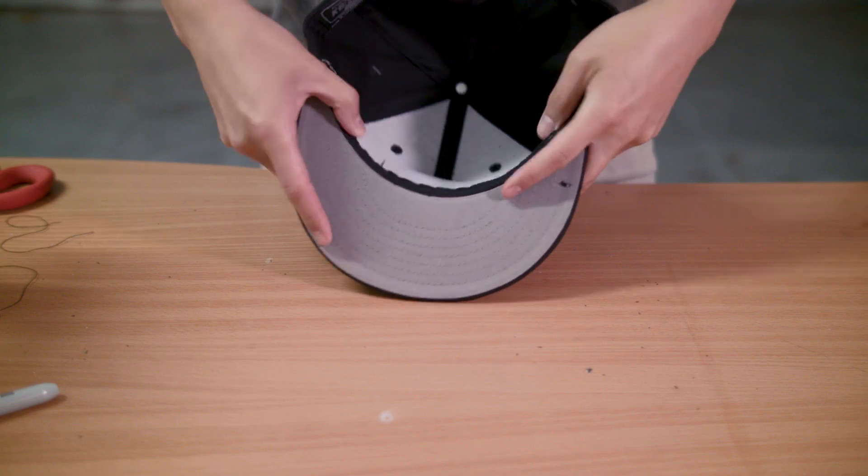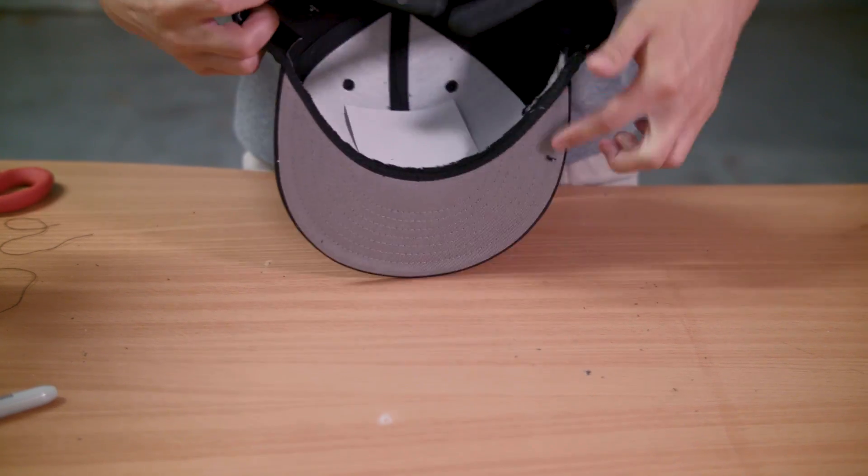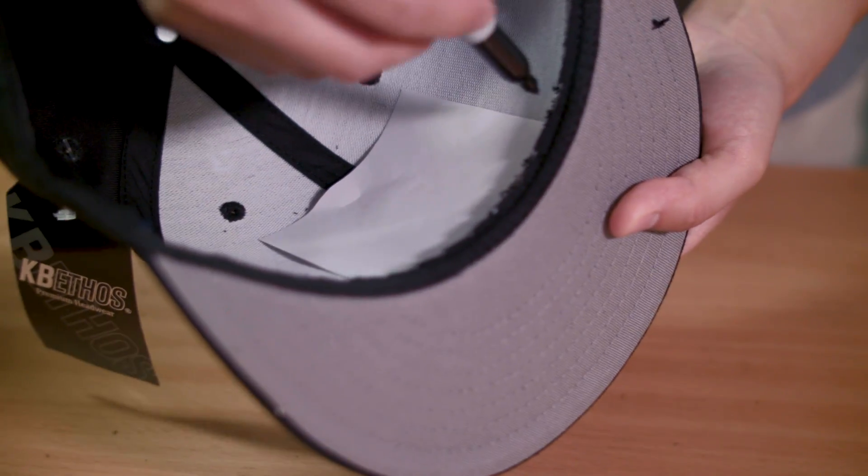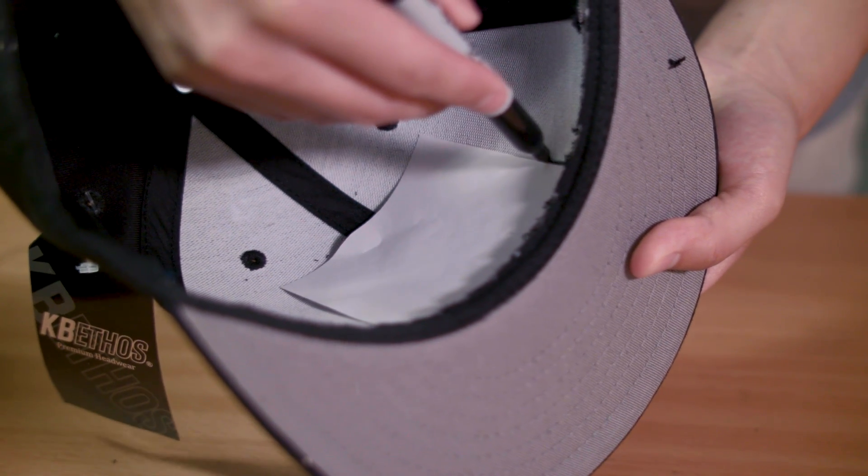Now, we'll take the paper template we made earlier and center it on the inside of our hat, up against the bottom. And just like with the sun visor, we traced out the border with a sharpie.